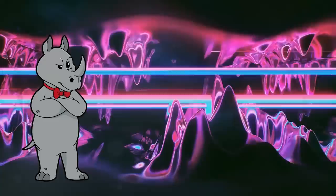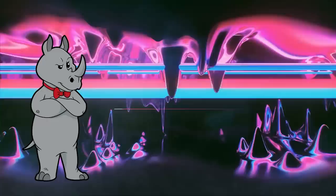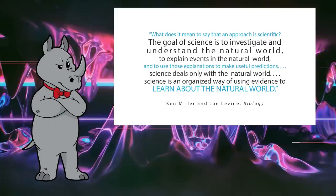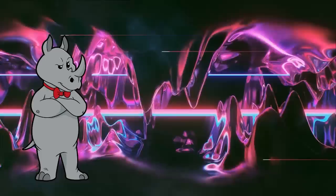Why does that matter? Simple. Let's take a look at how various textbooks define how science works. Is this whole video really just going to be a definition fight again? Three videos into your series on fossils and you're still not talking about fossils. What does it mean to say that an approach is scientific? The goal of science is to investigate and understand the natural world, to explain events in the natural world, and to use those explanations to make useful predictions. Science deals only with the natural world — it is an organized way of using evidence to learn about the natural world.